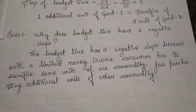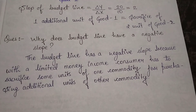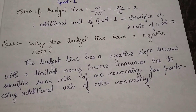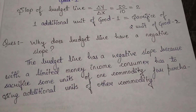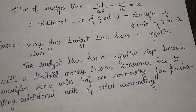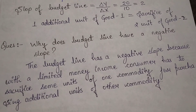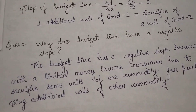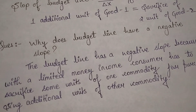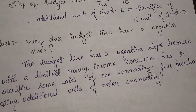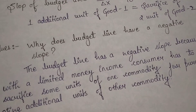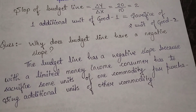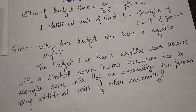Sometimes a question asks: why is the slope of budget line negative? The budget line has a negative slope because with limited money income, the consumer has to sacrifice some units of one commodity for purchasing additional units of other commodity. With limited money income you cannot purchase extra units of both commodities - if you increase consumption of one, you must reduce consumption of the other. For purchasing one additional unit of chips, you must reduce chocolate consumption.